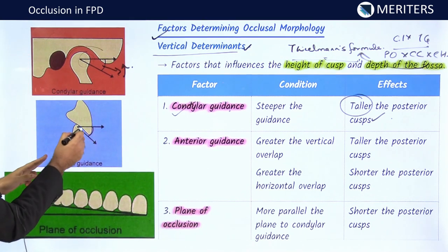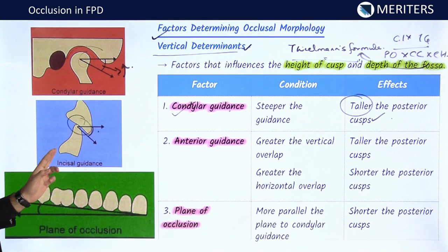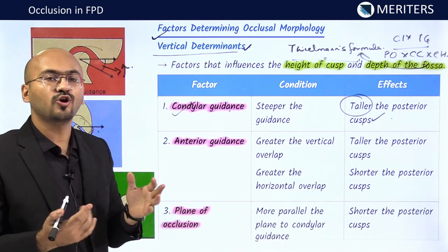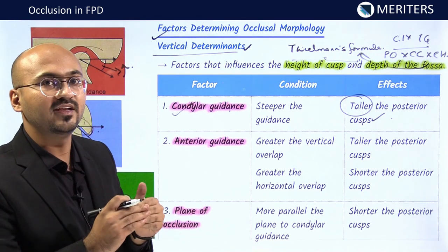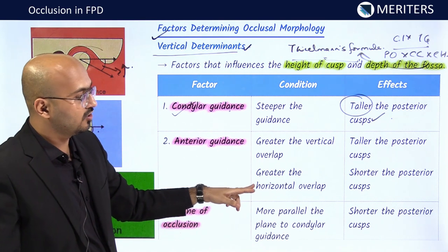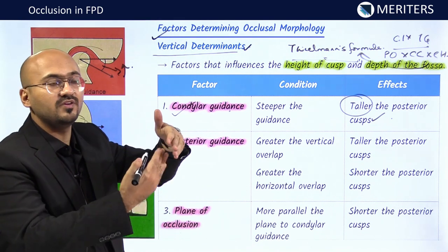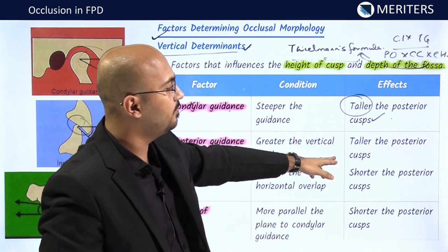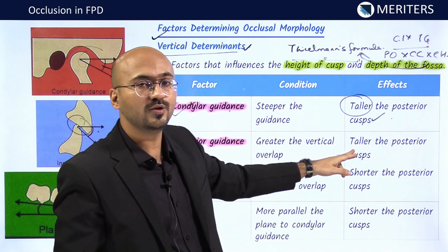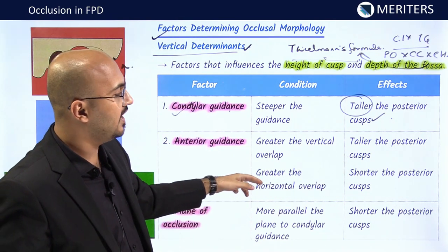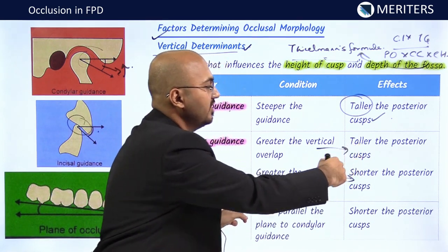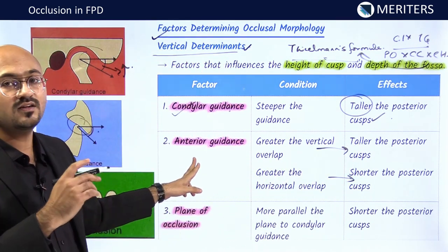The next vertical determinant is incisal guidance or anterior guidance, determined by the lingual slopes of upper anterior teeth. Greater the vertical overlap, the greater the separation needed posteriorly — so greater vertical overlap requires taller posterior cusps. Greater horizontal overlap requires shorter posterior cusps. If incisal guidance is too steep, you again need taller posterior cusps.